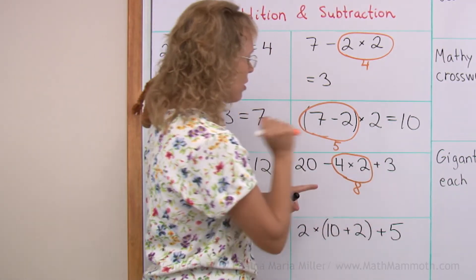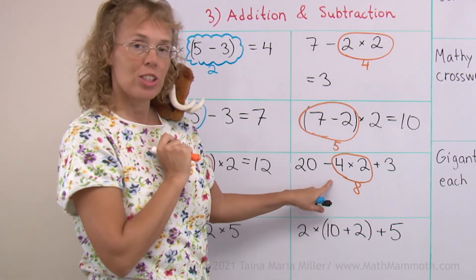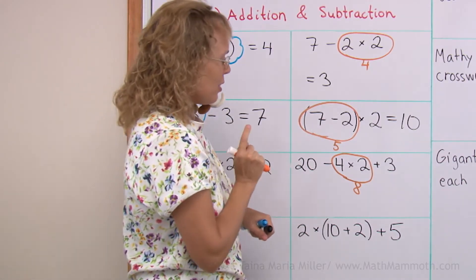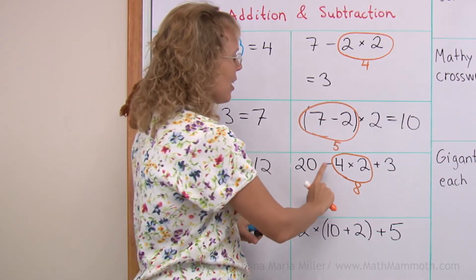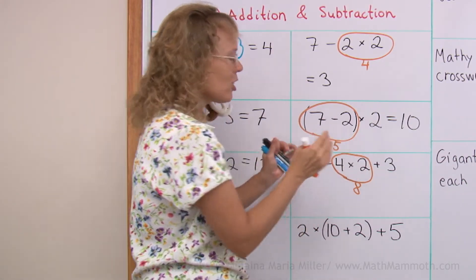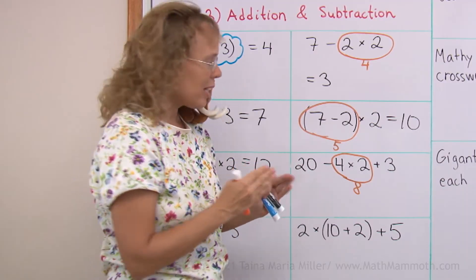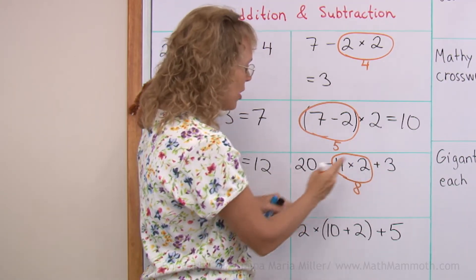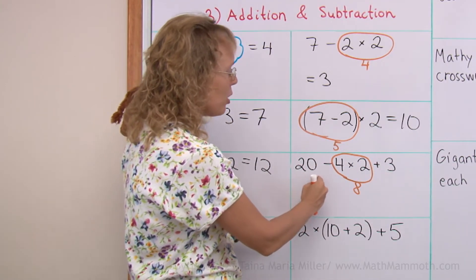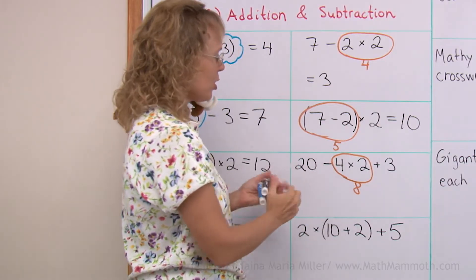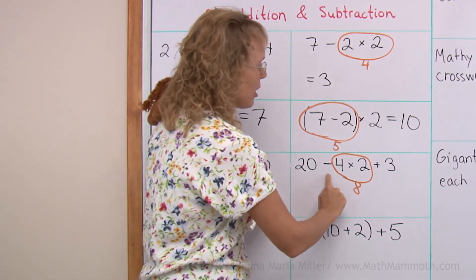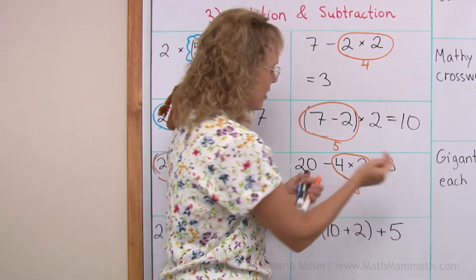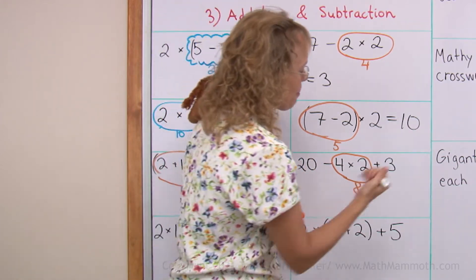Do we do addition first or the subtraction? The additions and subtractions are on the same level, so if you have several of them you start from the left and go in order. So we go 20 minus 8 first, and that's 12. Then add 3, so we get 15.